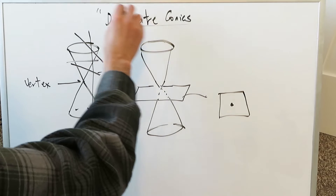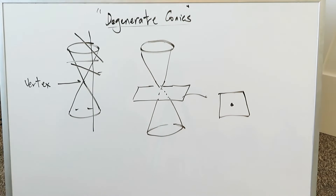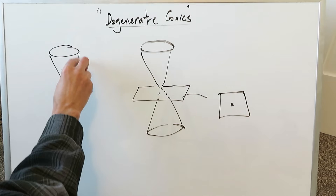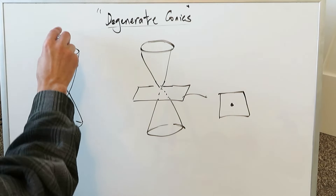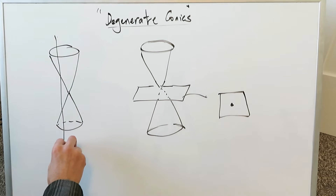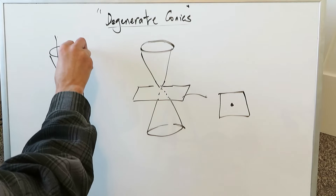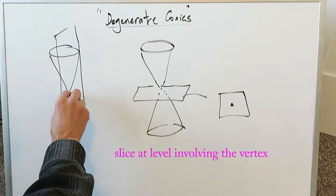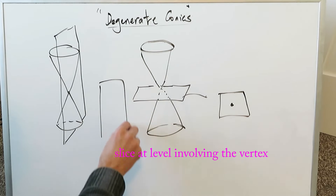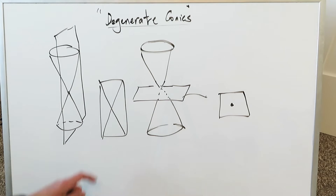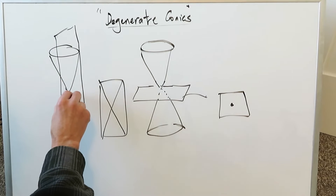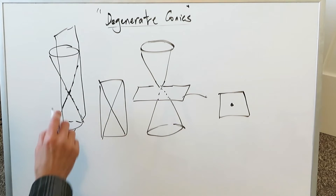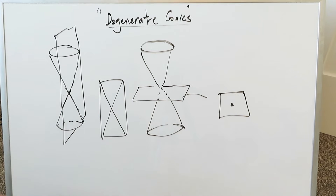You're generating degenerate conics, which are the subject matter of this video. If you were to take a similar representation of cones and do a slice right through here, going through the vertex, and then look at it front-on, you're basically going to be generating a degenerate conic which looks like two intersecting lines — one going across this way, and the other going across the other way. That's your intersecting lines.